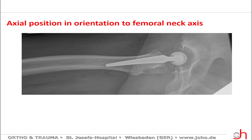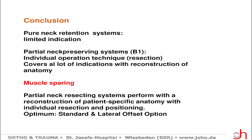In conclusion, if we talk about short stems, there are different types of design in relation to the anatomical situation of the femoral neck. The very proximal resecting systems have a limited indication, as Professor Morlock just demonstrated in his presentation. The so-called partial neck preserving or neck resecting systems, type B1, require an individual operation technique — especially the resection must be performed very precisely according to the preoperative planning. But a philosophy like this covers a wide range of indications with a perfect reconstruction of anatomy.